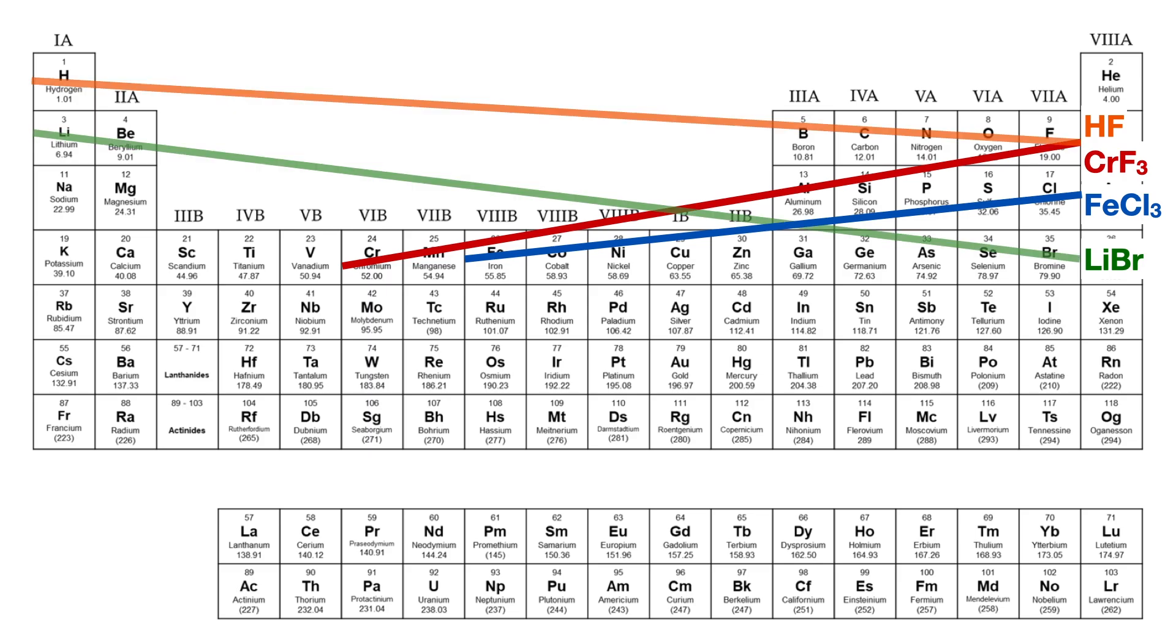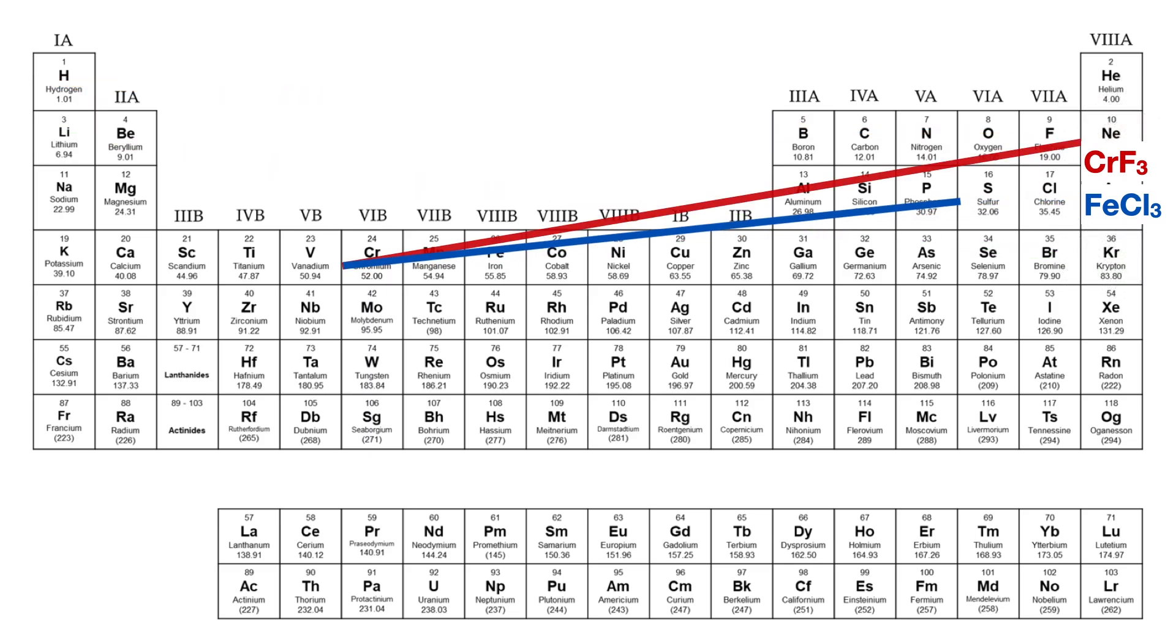Once again, simply eliminate any salts with negative slopes and then choose the salt with the steeper and longer slope, which is the red chromium fluoride.